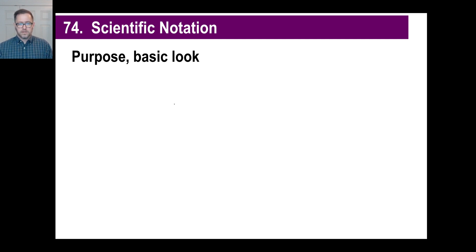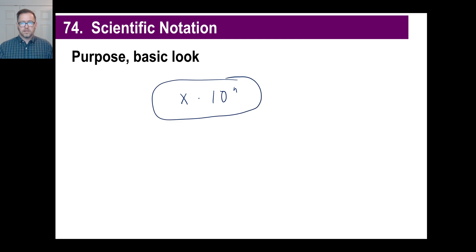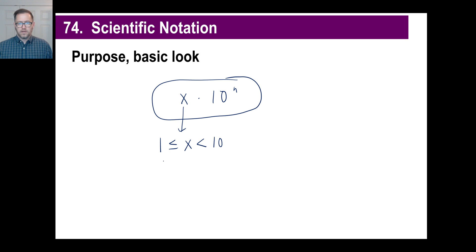Let's look at how this looks. It's x times 10 to the n power — that's what scientific notation looks like. Now, this number x — you need to make sure this number is between 1 and 10. It cannot be 10, although it can be 1. So you'll have a number like 1.6 times 10 to the 5th power, or 9.8 times 10 to the negative 12th power or something like that.